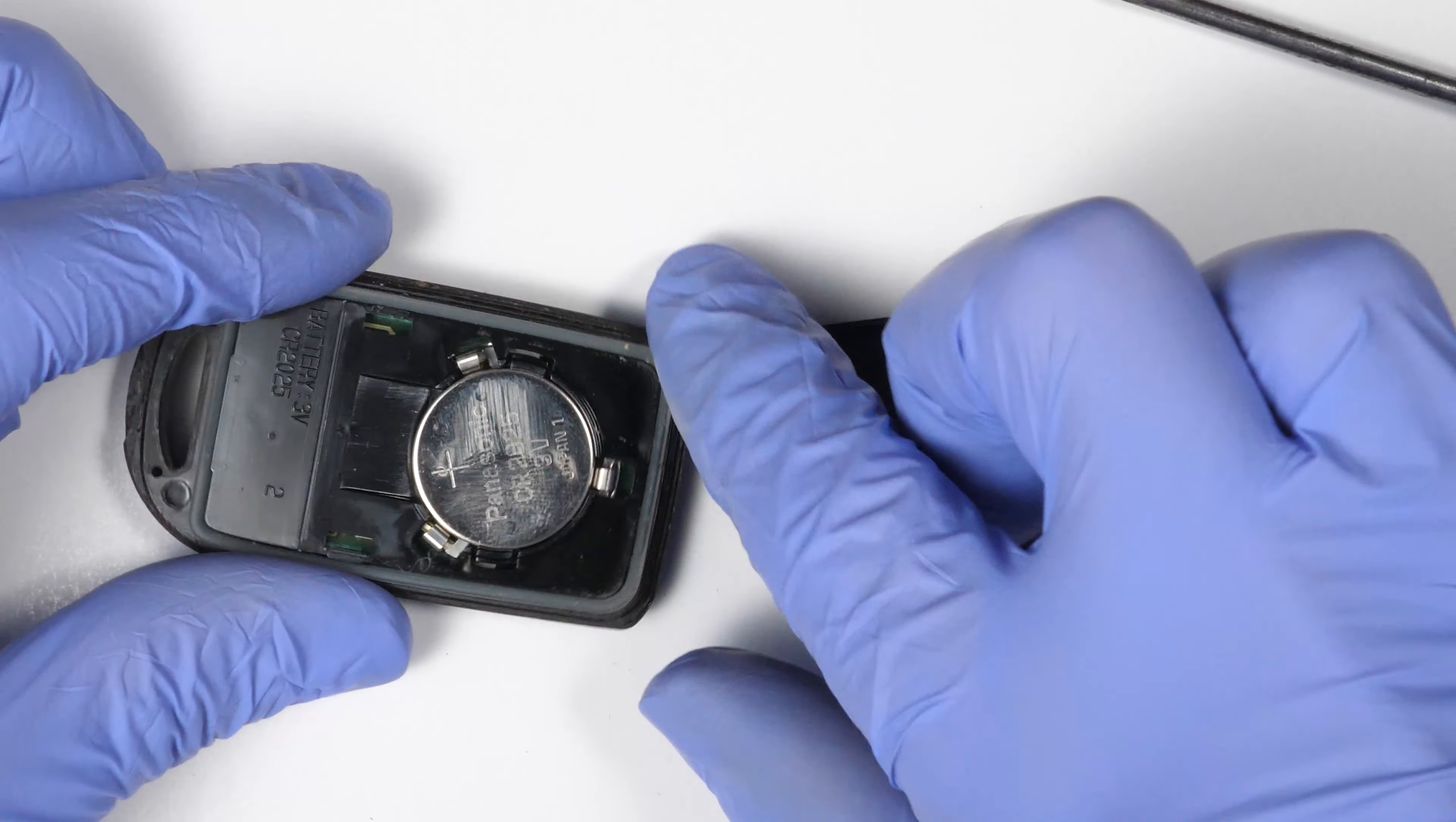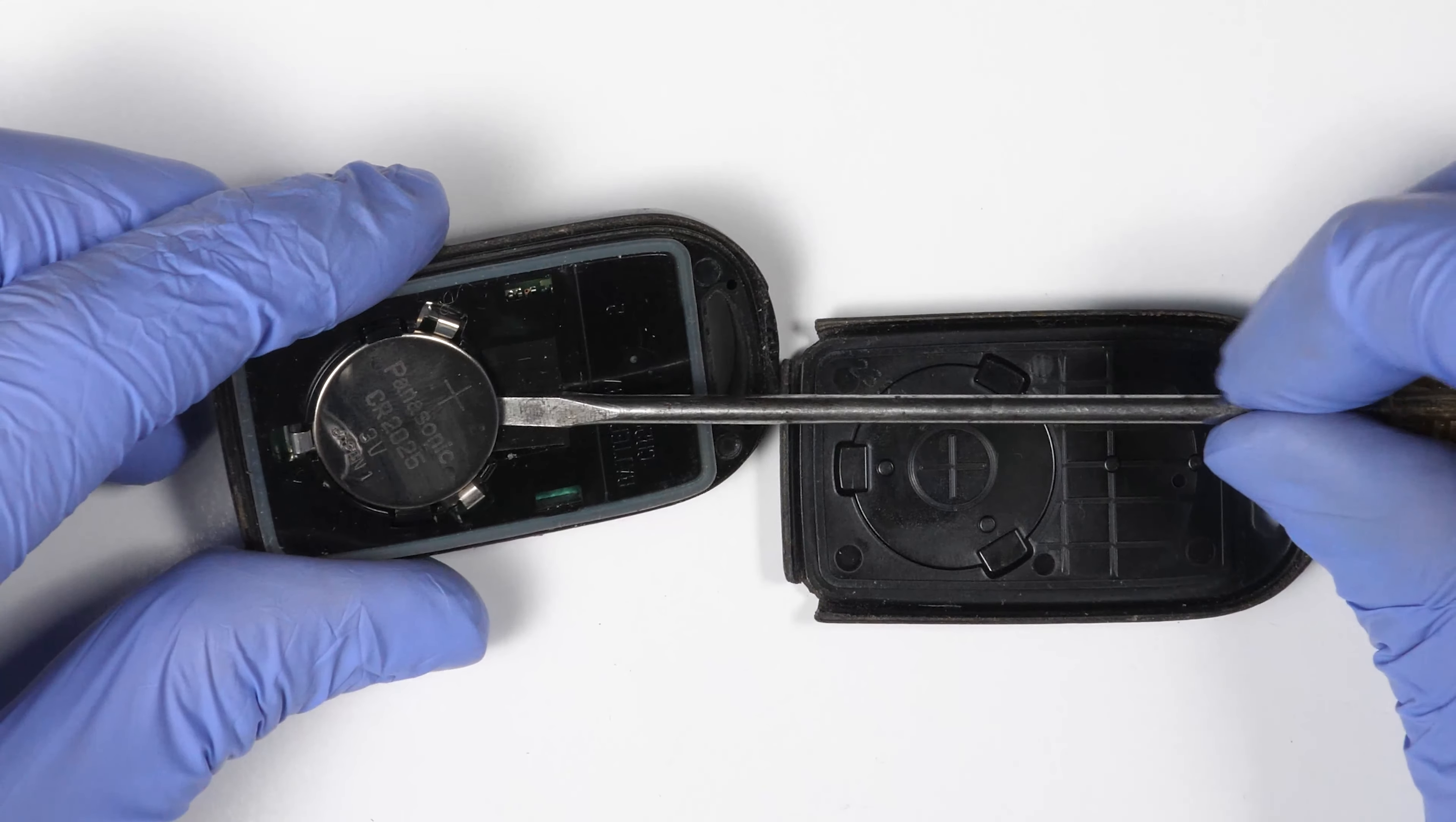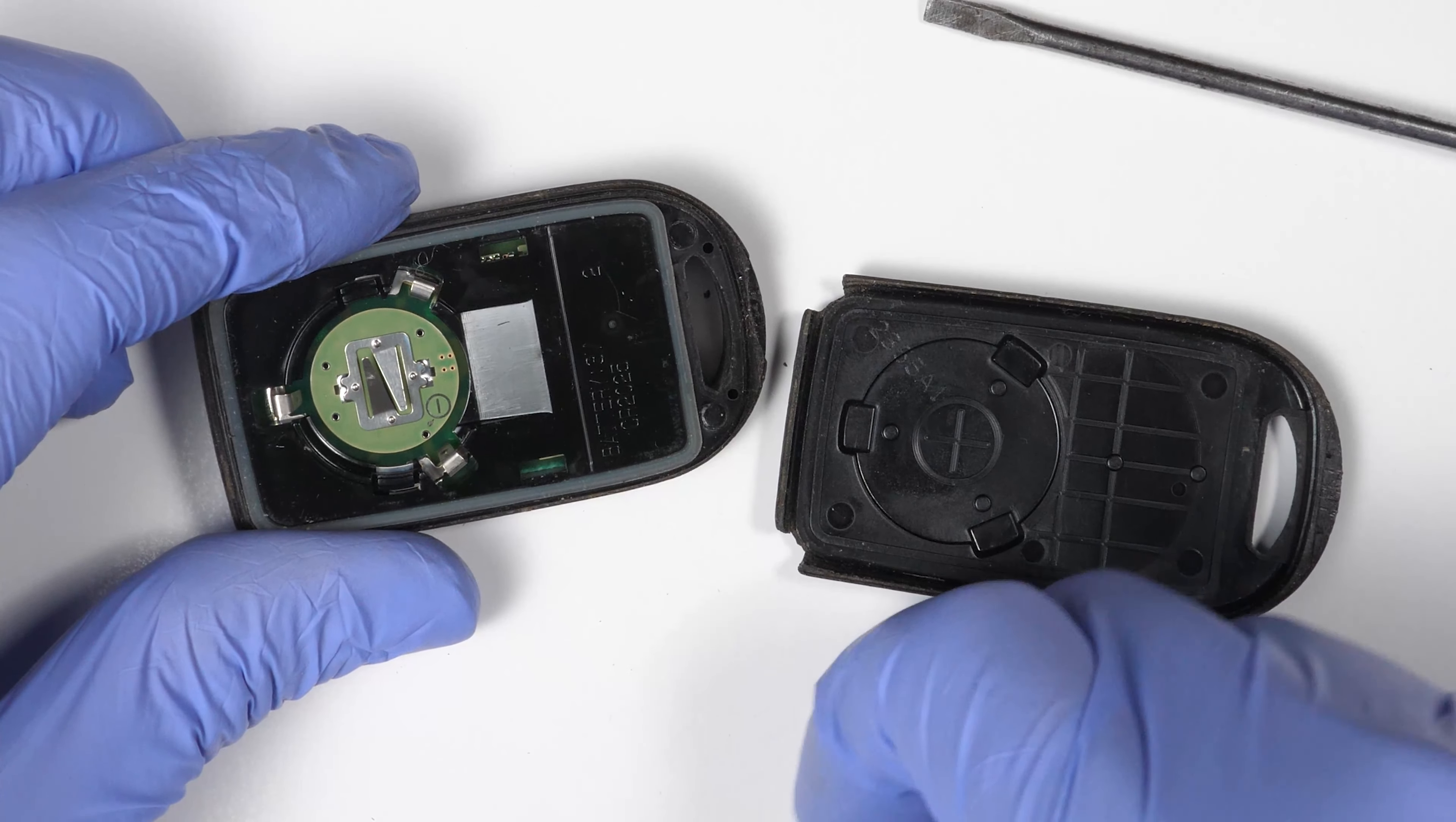To remove it, it's quite simple. Here there's a small indentation where you can slide your flathead screwdriver, and without the need to twist or anything, it will pop the battery out.